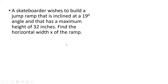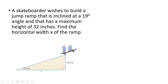Example number three: a skateboarder wishes to build a jump ramp inclined at a 19-degree angle with a maximum height of 32 inches. Find the horizontal width x of the ramp. The ramp is inclined at 19 degrees, the maximum height is 32 inches, and we need the horizontal width x. The 90-degree angle is at the base, and the slanted ramp is the hypotenuse.